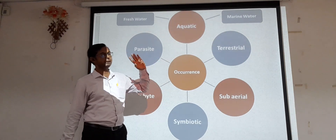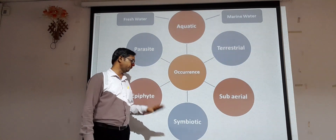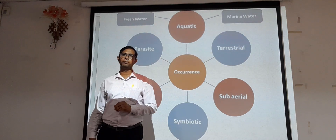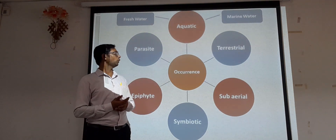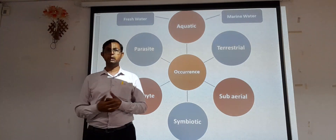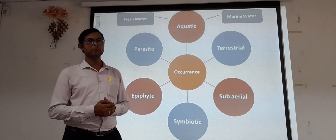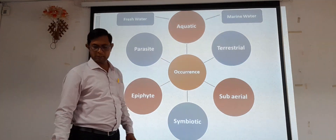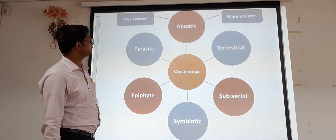So Chlorophyceae shows a variety of types of occurrence: aquatic, terrestrial, subareal, epiphytic, symbiotic, and parasitic modes of growth. This covers the occurrence we discussed in the last lecture.